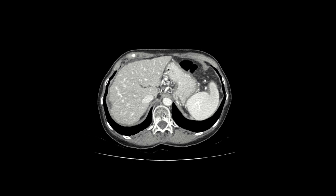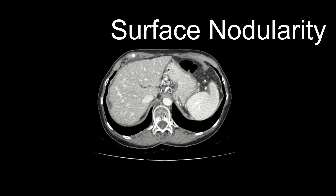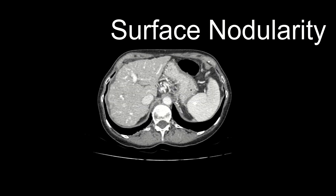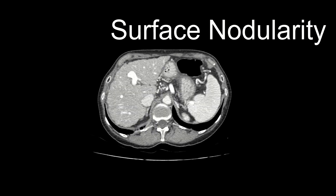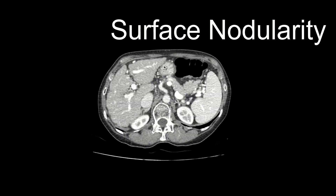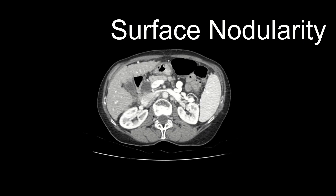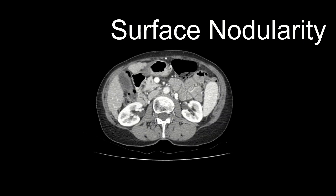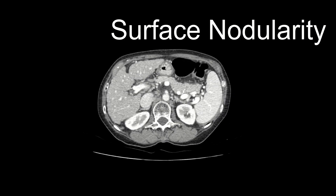The first imaging feature is surface nodularity, caused by the formation of regenerative nodules and alternating areas of fibrosis. This is a cirrhotic liver with frank surface nodularity all the way around. Normally, the liver surface is very smooth.